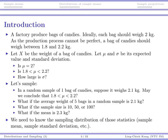Suppose this factory makes bags of candies. Ideally, each bag should weigh 2 kilograms — you hope that all your bags contain basically the same amount. Unfortunately, the production process cannot be perfect, so there are some fluctuations. A bag of candy should at least be between 1.8 and 2.2 kilograms. So we relax our requirements: as long as the bag is within 1.8 and 2.2 kilograms, it's acceptable.